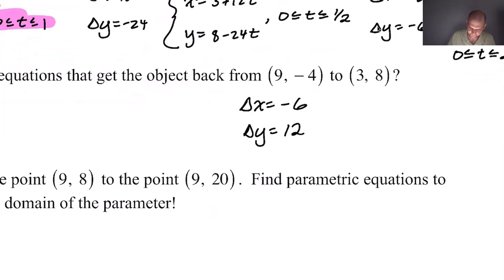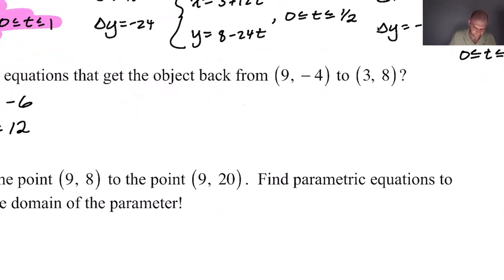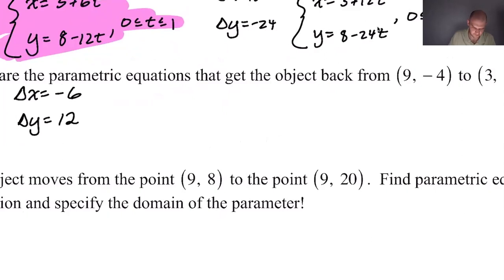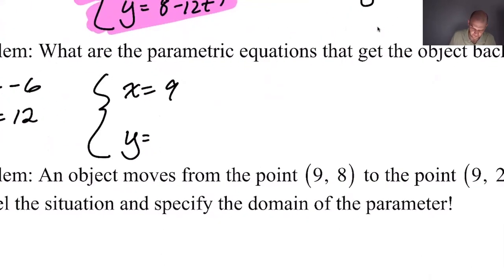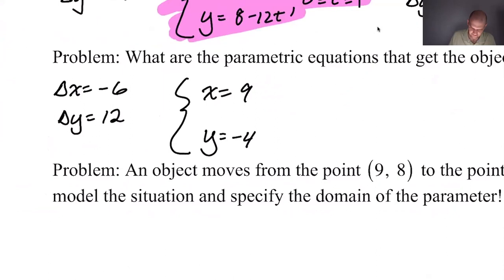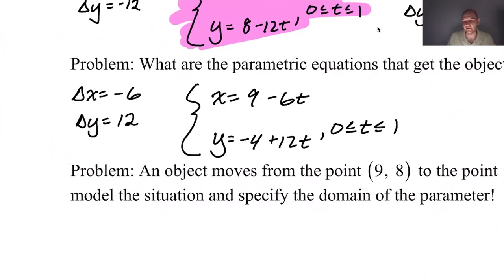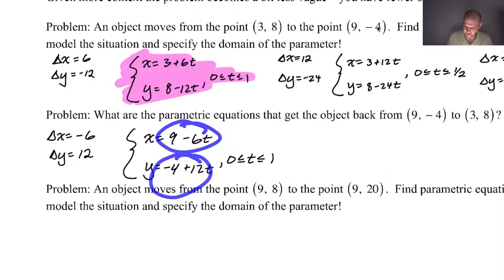If I use these, I could just say that my equation is X is going to start at 9 and Y is going to start at -4, and then let's say minus 6T and plus 12T and then 0 to 1. This is totally fine. It's going to do it. When T equals 0, you just get (9, -4). When T equals 1, you get 3 from here and you get 8 from here. So you've done it.